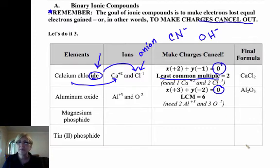Now we want the lowest whole number ratio, so we need to find the least common multiple. Two ways to do this. You can set up an algebra. I need some number of calciums times plus two, some number of chlorides times minus one, and you want the least common multiple, the lowest whole number ratio that will make that zero. Another way to do it is I need the least common multiple of two and one. One times two is two, and two times one is two. So I need one calcium, we never write it, and I need two chlorides.